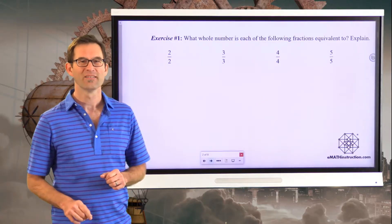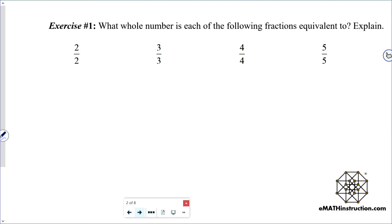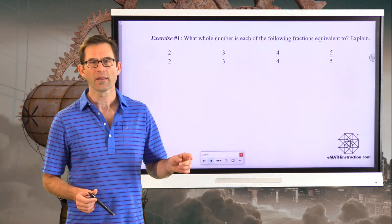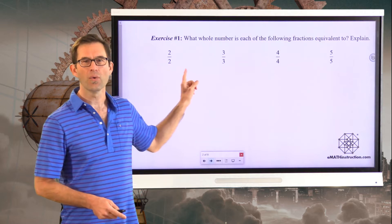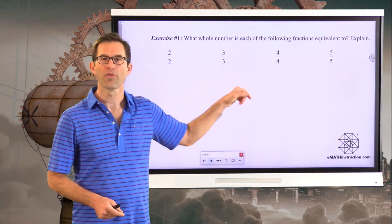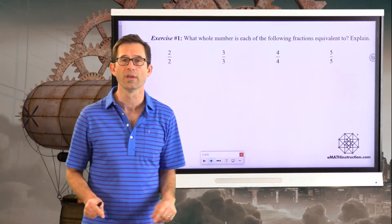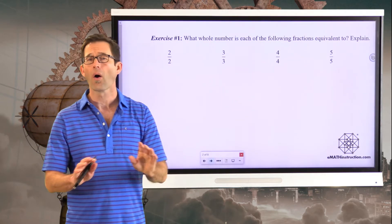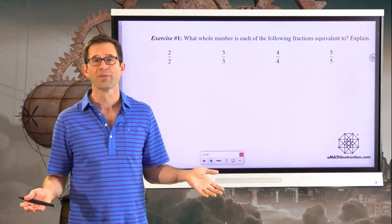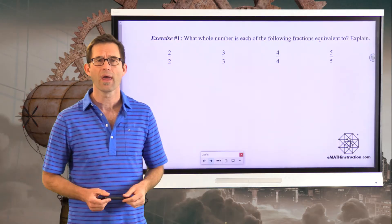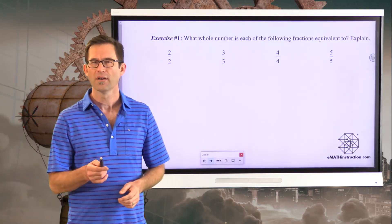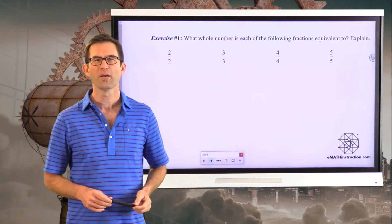What whole number is each of the following fractions equivalent to? I claim that two halves, three thirds, four fourths, and five fifths are all equal to the same number. Pause the video now and tell me what that number is.